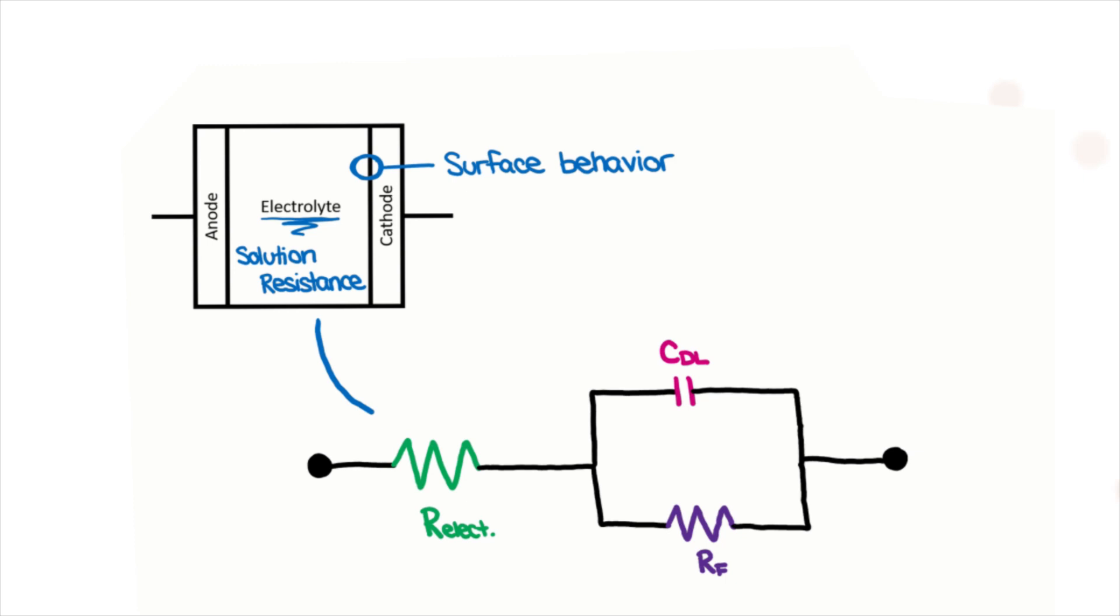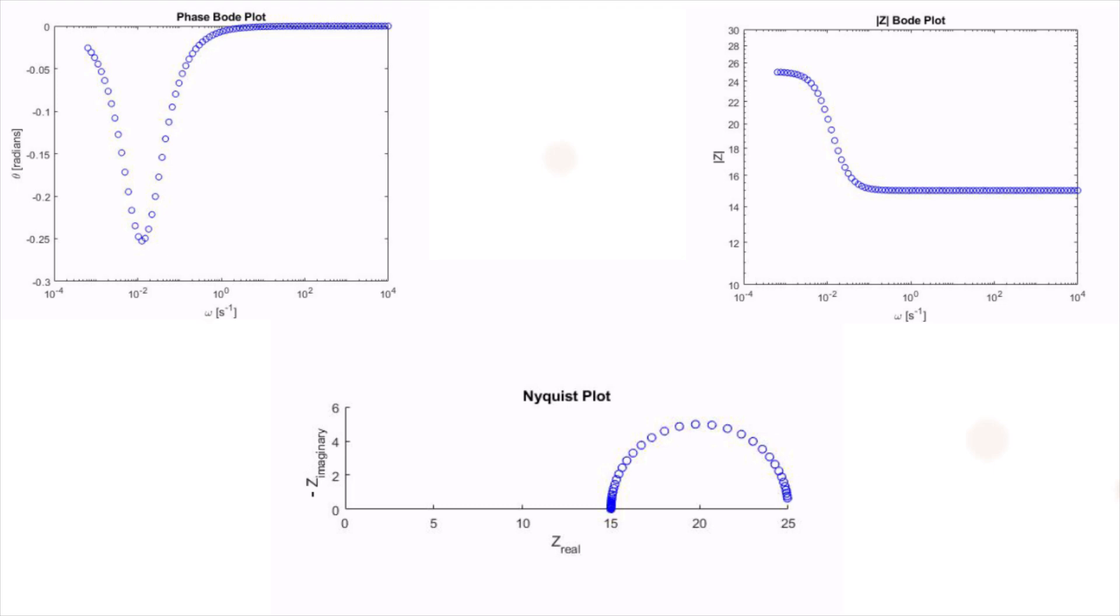In this case, the equivalent circuit looks like this, and the Nyquist and Bode plots can be adjusted accordingly.